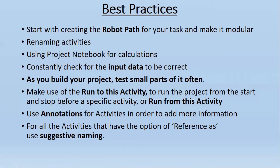For example, if you're using 10 Type Into activities in your process and you get an error that 'Type Into has thrown an error,' you'd be confused about which one it was. But if you rename them — Type Into First Name, Type Into Address, Type Into State, Type Into Pin Code — then if 'Type Into State' throws an error, you know exactly which one to debug.